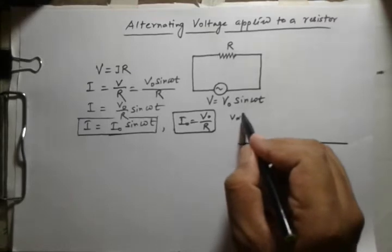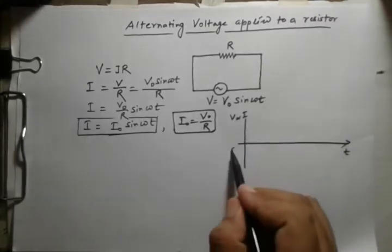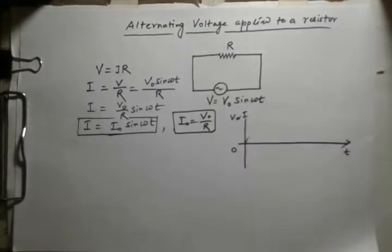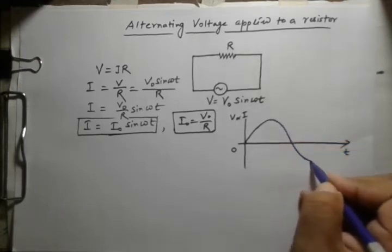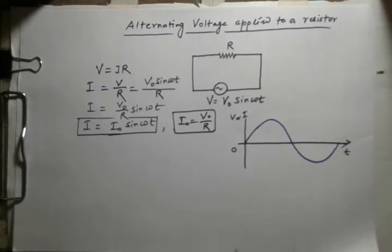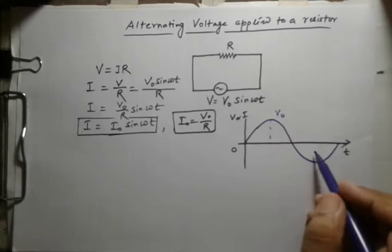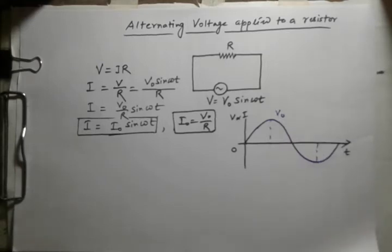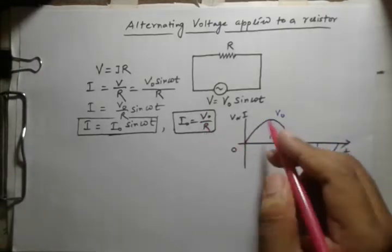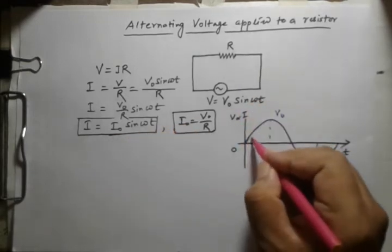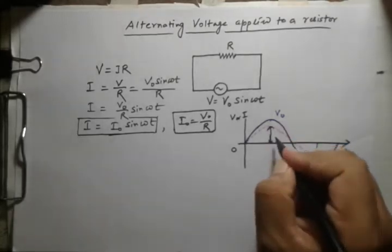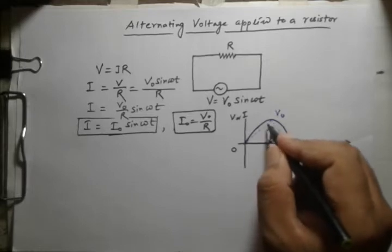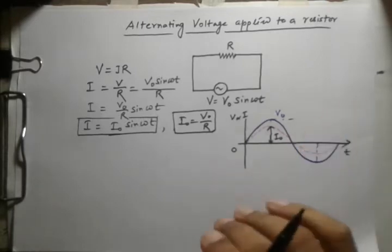If we draw the waveform of voltage and current, with voltage or current on the vertical axis and time on the horizontal axis, the voltage waveform has a peak value of V₀ and minus V₀. The current waveform has a slightly smaller peak of i₀, which equals V₀ by R. There is no phase difference — both start from the same point.